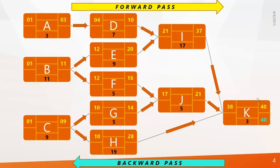Remember how we calculated early finish in the forward pass: we added duration to early start and deducted one. To find late start, subtract duration from late finish and add one. So the late start of activity K becomes 38. The equation is: late finish minus duration plus 1 equals late start. For the next level — I, J, and H — to find late finish, deduct one from late start, so late finish of I, J, and H becomes 37.